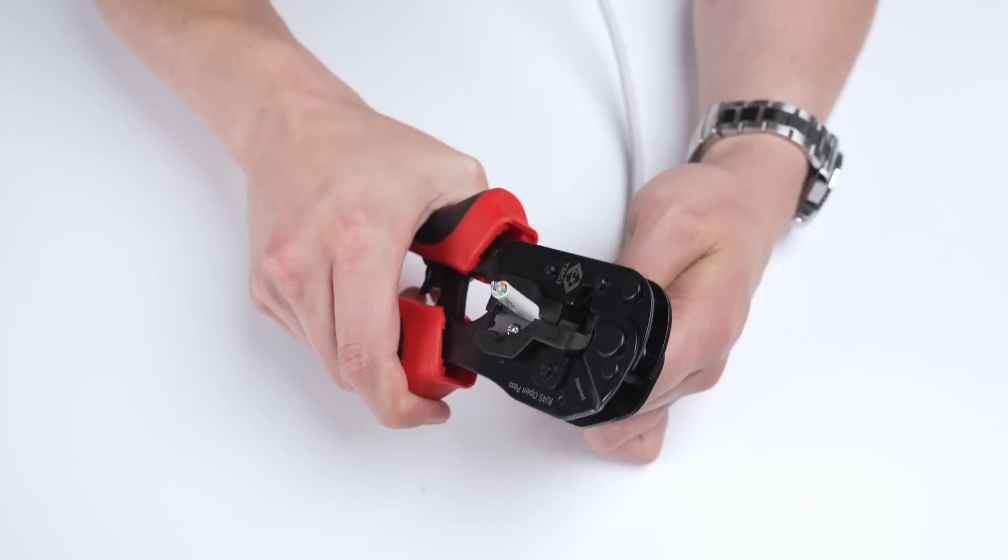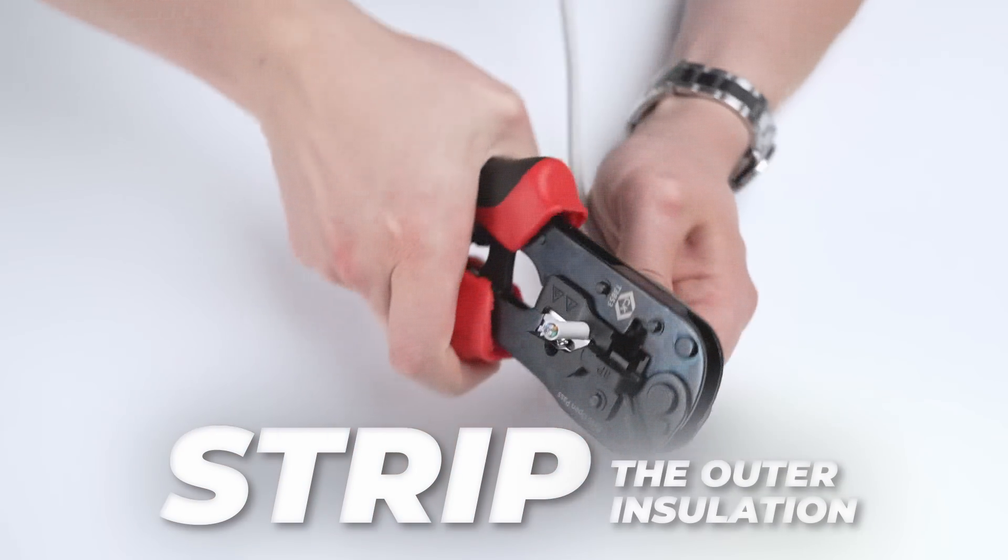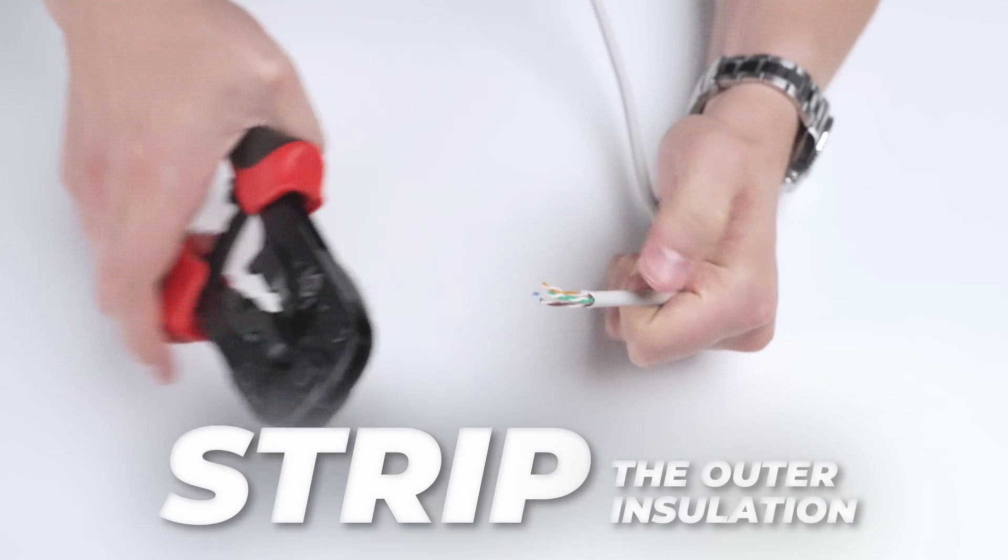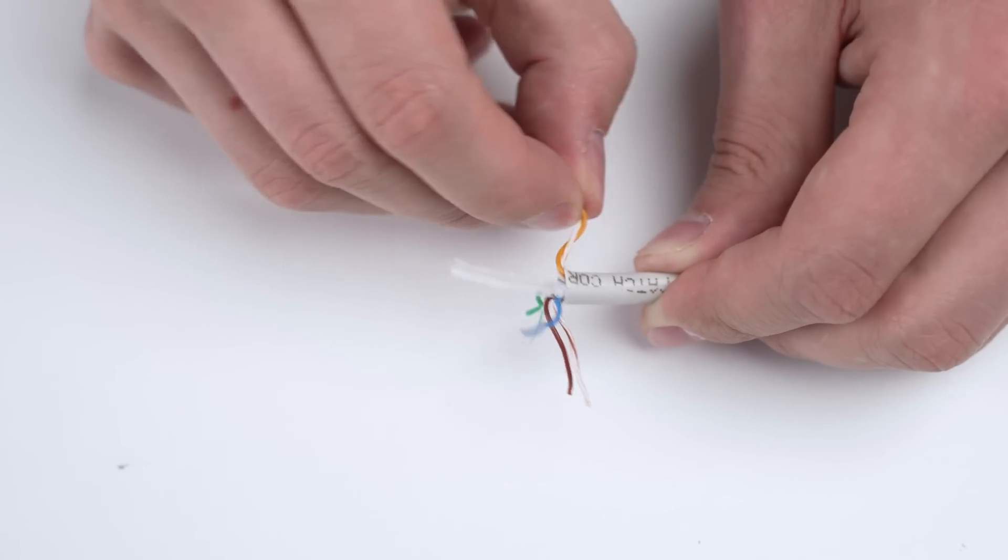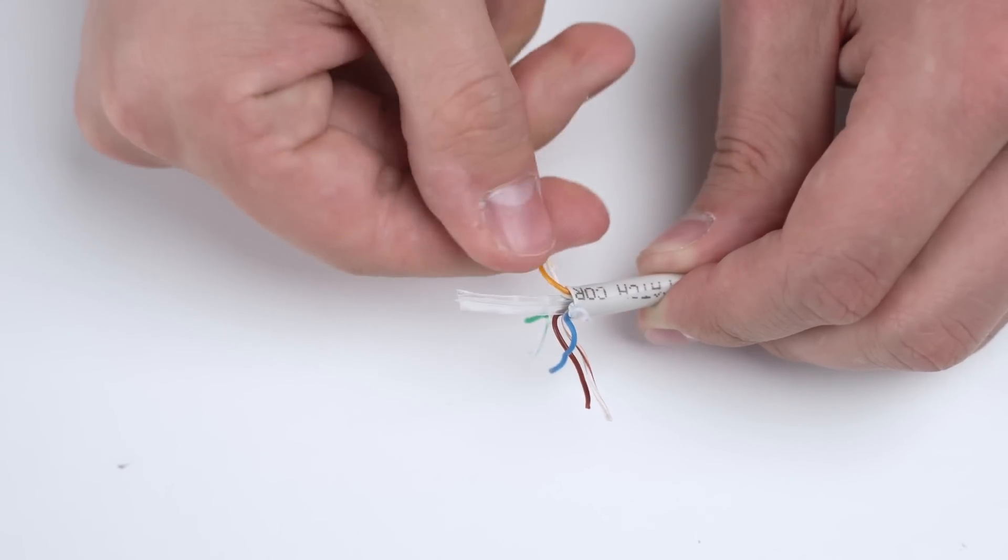Step 2. You should strip about 2 to 3 centimeters of insulation. Be careful not to damage the inner wires. After removing the outer sheath, you need to untwist the wire pairs.